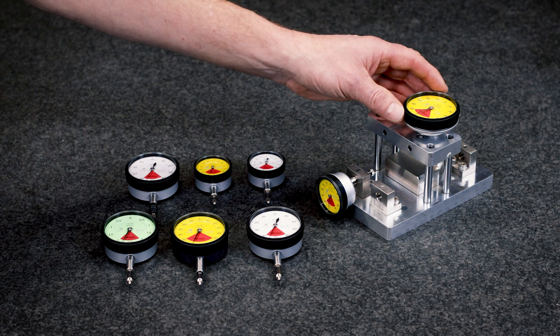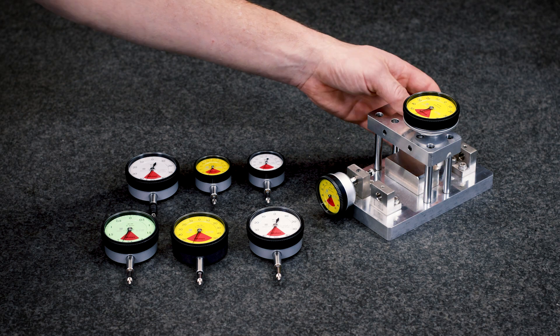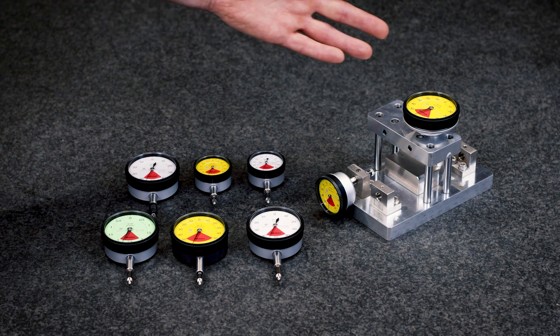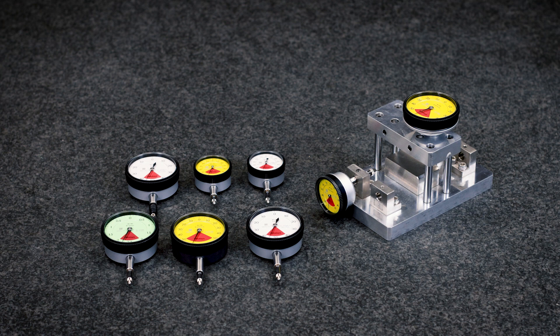Types with a back plunger design are available as well. For more comfortable readability, for example, in custom-made jigs, indicators with a backward plunger orientation make sense.